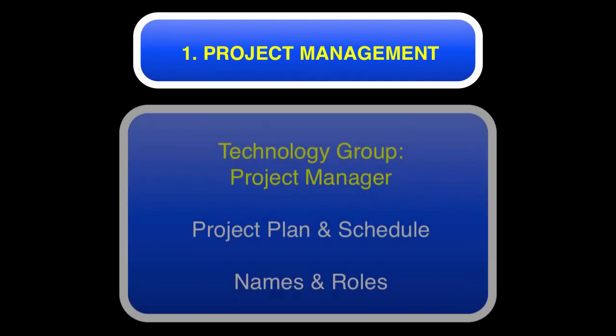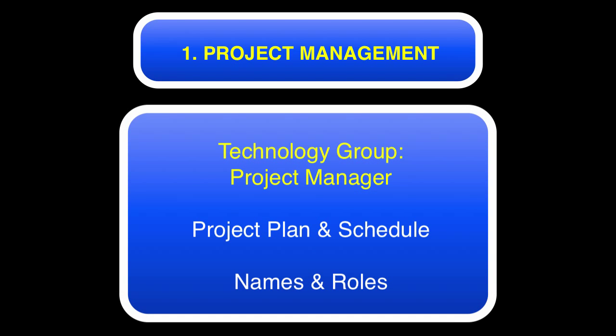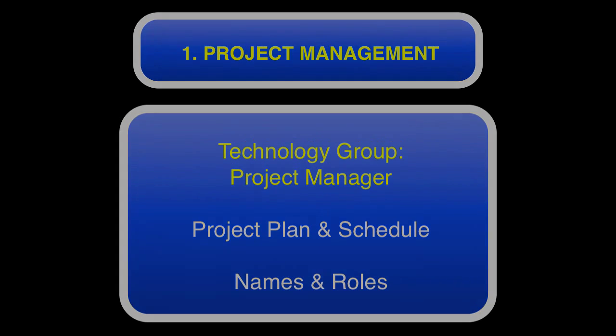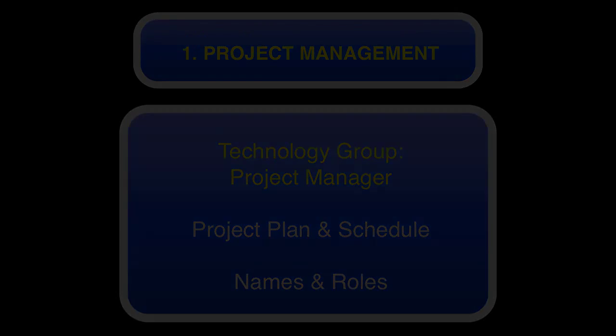In terms of project management, the technology group is going to name a project manager to coordinate all aspects of the project, including the development of a detailed project plan and schedule. They're also going to do what I think of as 'names and roles' at the start of the project — creating a list of stakeholders, a single point of contact for every vendor group and system area: database group, app group, security group, etc. And each stakeholder will have a clearly defined role.